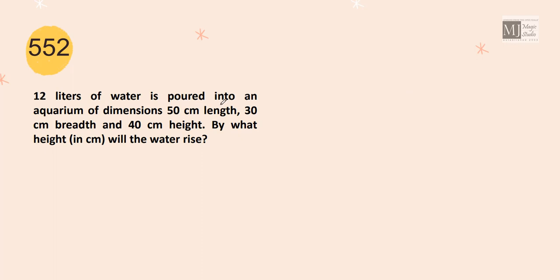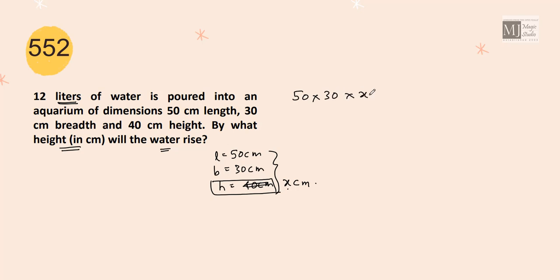12 liters of water is poured into an aquarium of dimension 50 centimeter length, 30 centimeter, and height is 40 centimeter. By what centimeter will the water rise? Let us take this height by which the water rises as x centimeter. The volume of the water is 12 into 1000 cc. So x or the height by which the water rises would be 12 into 1000 by 50 into 30, that is 8 centimeter.